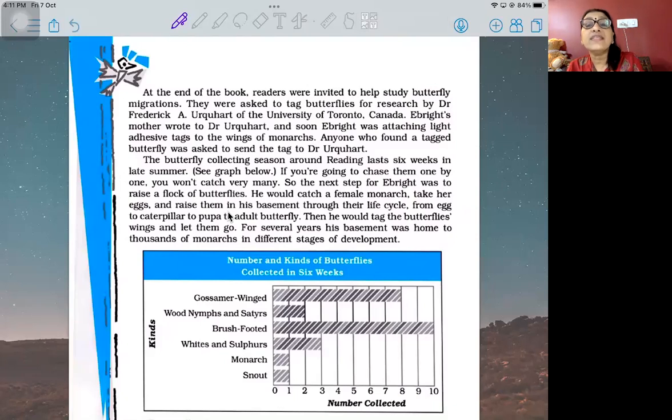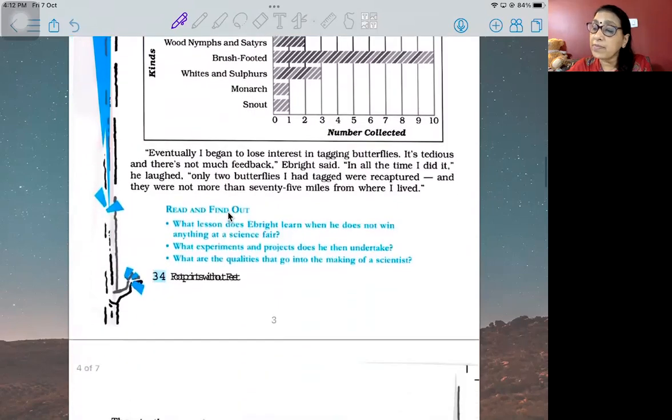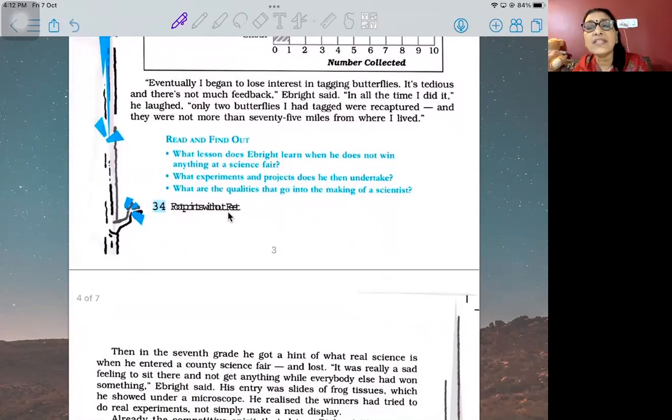If a butterfly started from Dilshad Garden and someone found it in Vivek Vihar, that person would send the tag to Dr. Urquhart, so they could track how much distance it covered. The butterfly collecting season around Reading lasted six weeks in late summer. If you chase them one by one, you won't catch very many. So the next step was to raise a flock of butterflies. He would catch a female Monarch, take her eggs, raise them in his basement through their life cycle from egg to caterpillar to pupa to adult butterfly, then tag their wings and let them go. For several years, his basement was home to thousands of Monarchs in different stages of development.